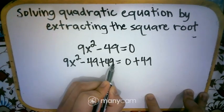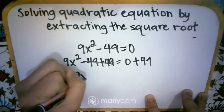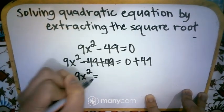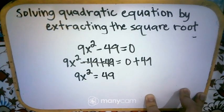Then after that, we can cancel negative 49 and 49. So we have 9x squared is equal to 49.